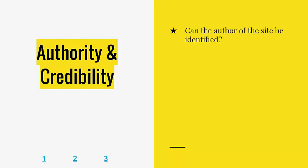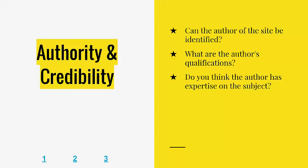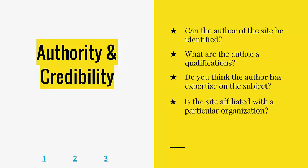The next criterion looks at the person or people responsible for the website. You want to make sure that the information is by someone who can be trusted and who is qualified to write about it. Ask yourself: Can the author of the site be identified? What are the author's qualifications? Do you think the author has the expertise to write on this subject? Is the site affiliated with a particular organization? You should also check out the domain of the site, which can tell you more information about who is responsible for it. Pause the video and evaluate the authority and credibility of the three practice sites.